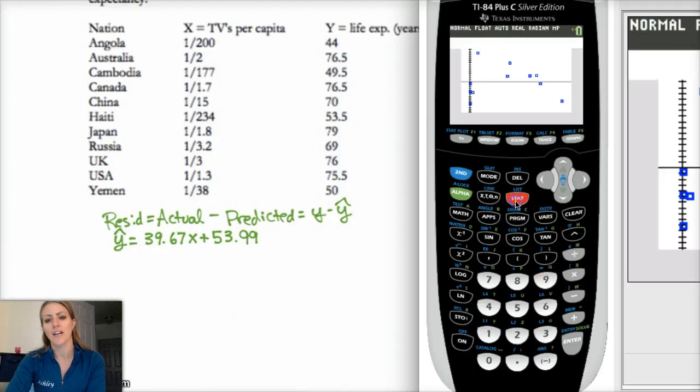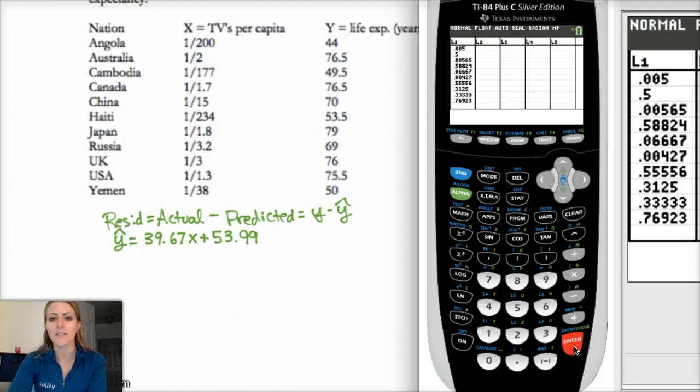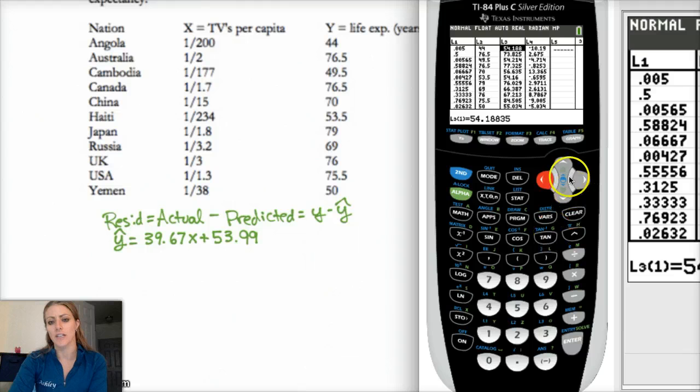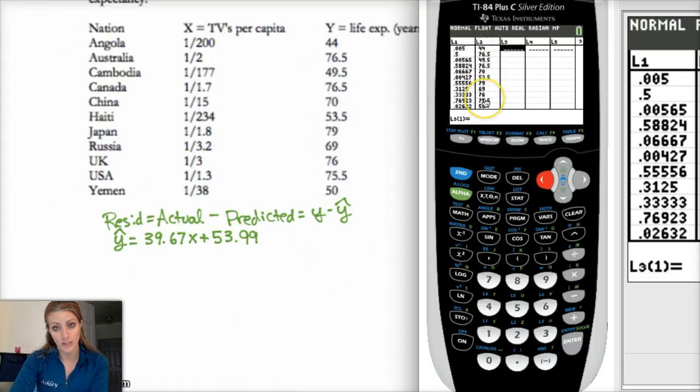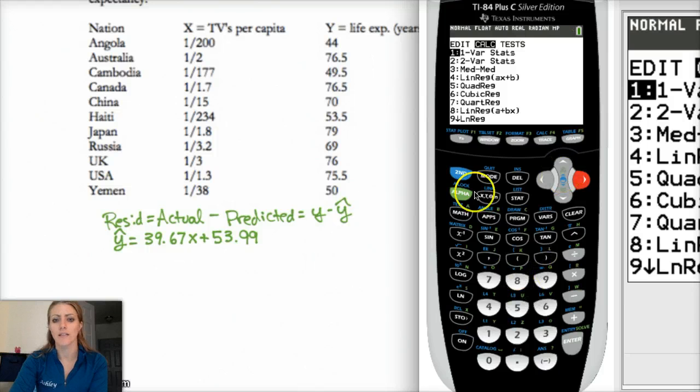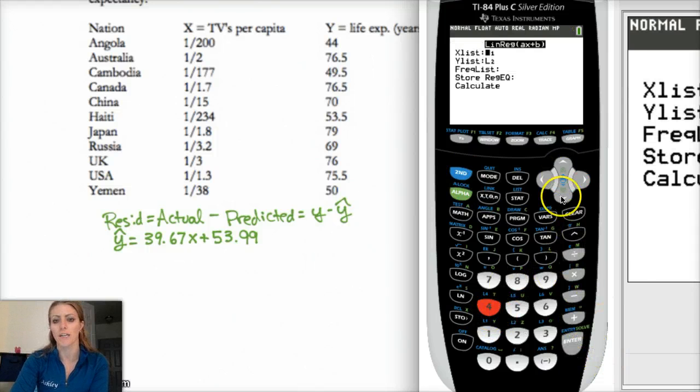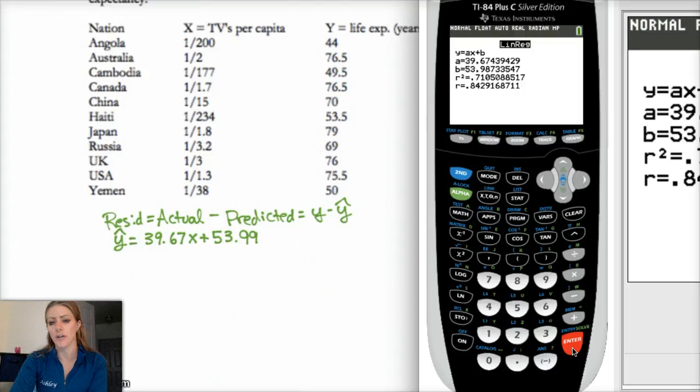So the other way to do it is go back to your stat edit. And instead of actually calculating the residuals, I'm going to clear out L3 and L4, which were the things that helped me calculate my residuals. And the only way this works is if you already have done some sort of stat calc, a linear regression analysis between L1 and L2. Otherwise your calculator won't know what you're trying to do or what residuals you're trying to get. So you have to do that first. So you have to do this LINREG first.